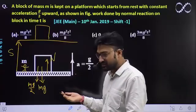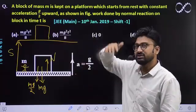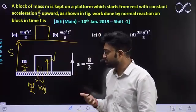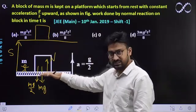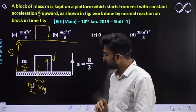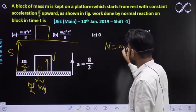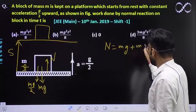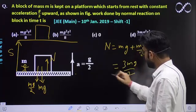Aapne ye lift mein bhi yeh cheez dekha hoga, jab lift if it is moving upward, aap thoda sa bhaari ho jate ho. Kyunki aap zyada force apply karte ho platform pe. Aur utna hi platform pe bhi upward force apply karte hai. This normal force must be equal to mg plus mg by 2. So it comes out to be 3mg by 2. This is the normal force that you are getting.